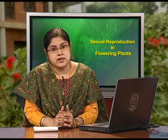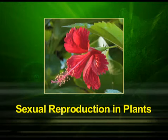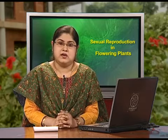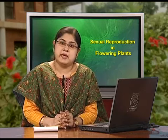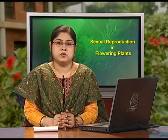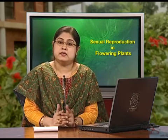Now let us start with the next part of the topic: sexual reproduction in plants, and discuss the process of double fertilization. After entering one of the synergids, the pollen tube releases the two male gametes into the cytoplasm of the synergid. One of the male gametes moves towards the egg cell and fuses with the nucleus, completing the syngamy.